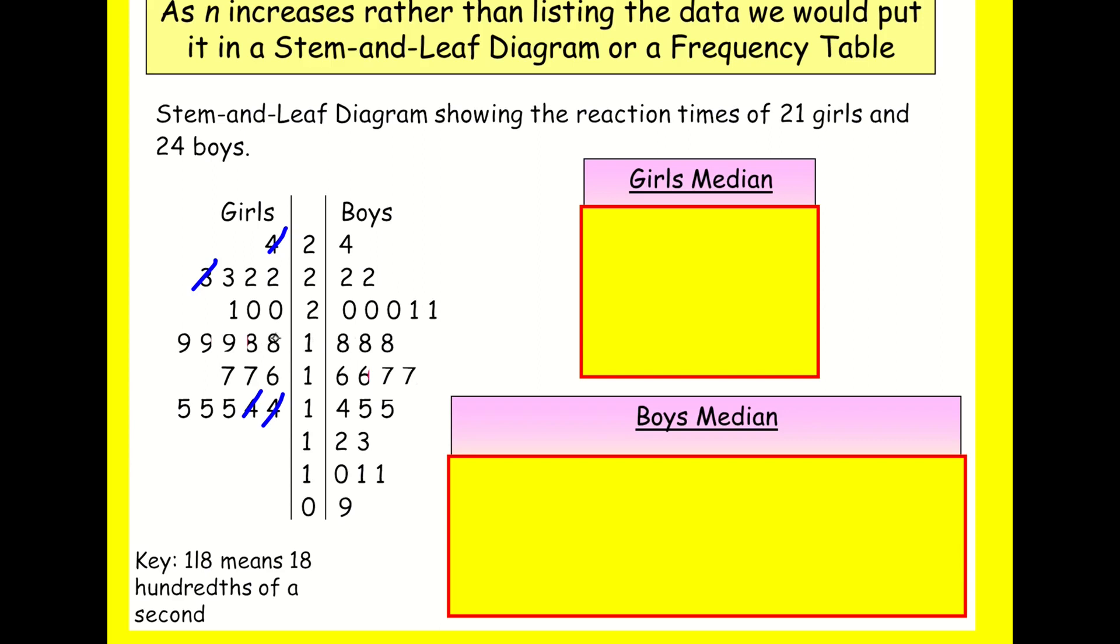Now there's a few ways you can do this. You can kind of do what you may have done before, kind of cross off values until you get to the, until you're left with the middle one. You've just got to be careful with this approach, because actually, when you do a double stem and leaf diagram like this, you're going from left to right in terms of order for the one on the right, but you're going from right to left for the leaf on the left. So just be careful how you cross them off.